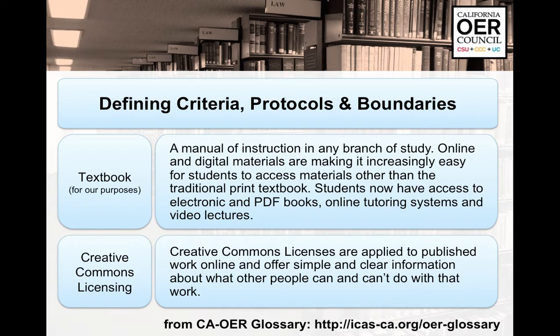We had to establish what a textbook means for our purposes. Could we use just a wiki? The council decided that a textbook really was a manual of instruction — something collected together that students would know how to navigate according to the course structure. We also looked for Creative Commons licensing on as many OER textbooks as we could. There's not yet a plethora of OER textbooks under CC licensing, but we are constantly evolving this.